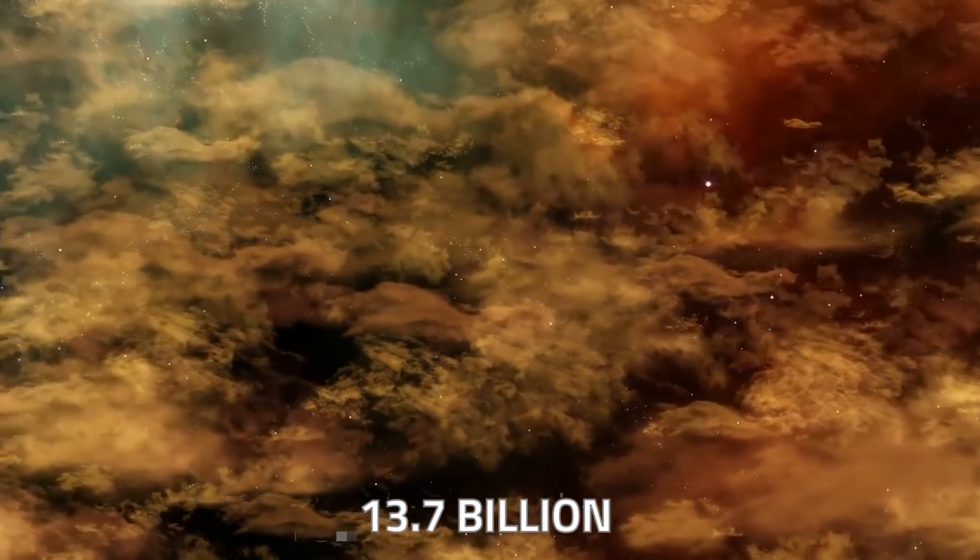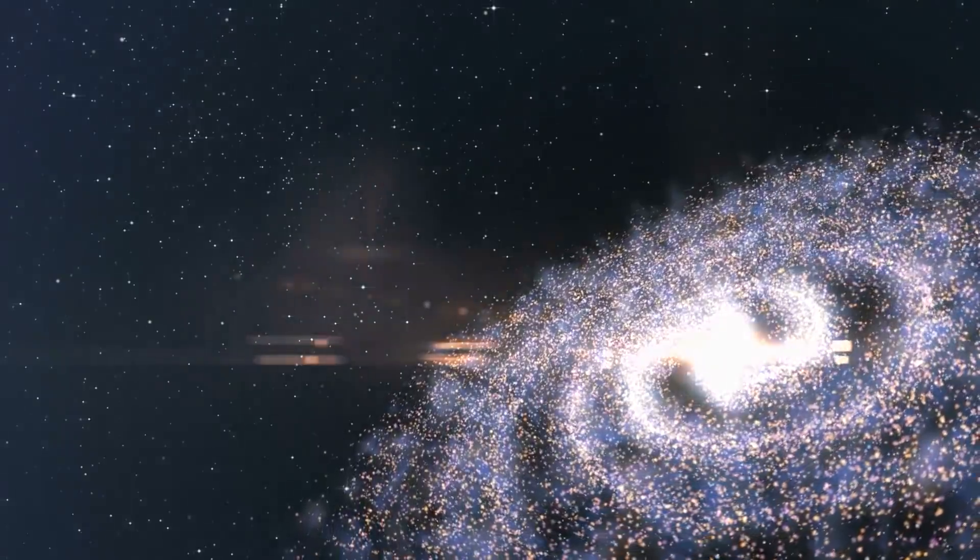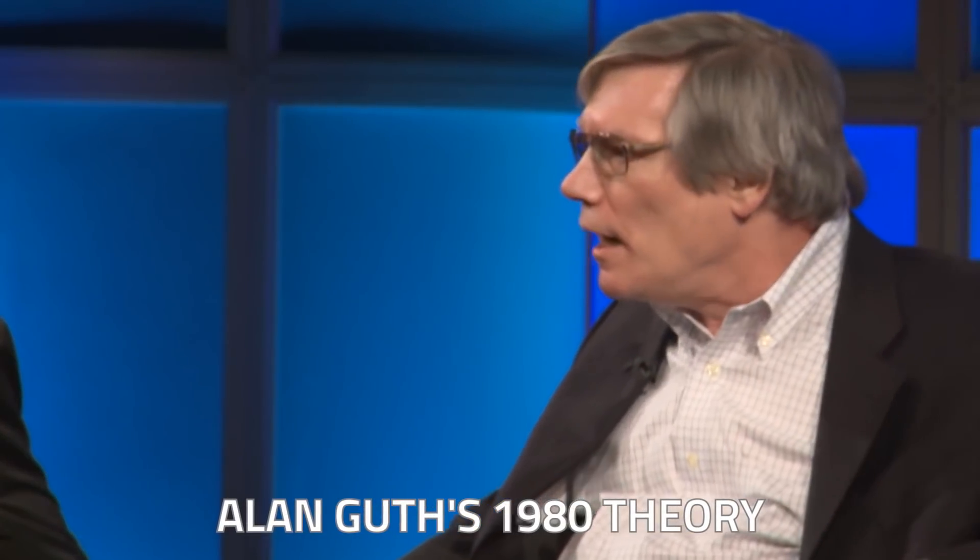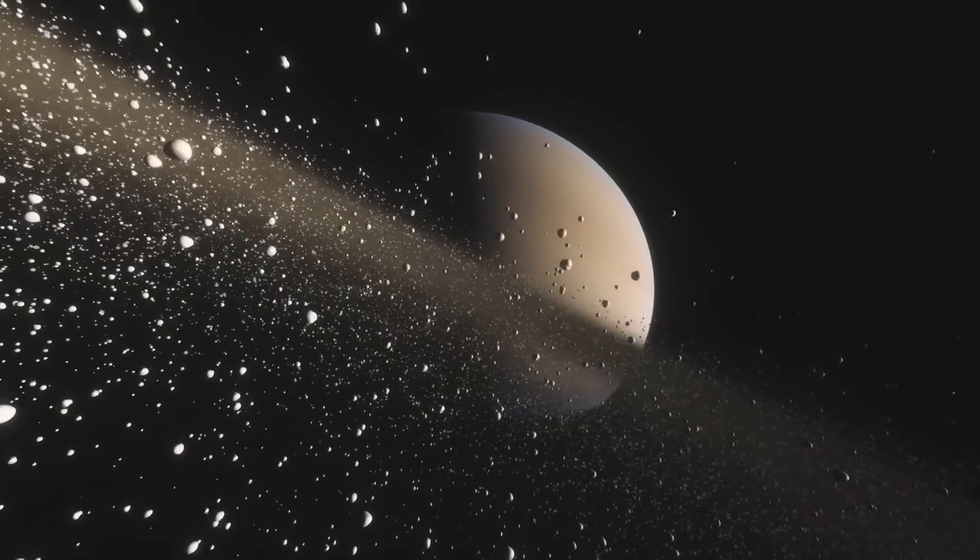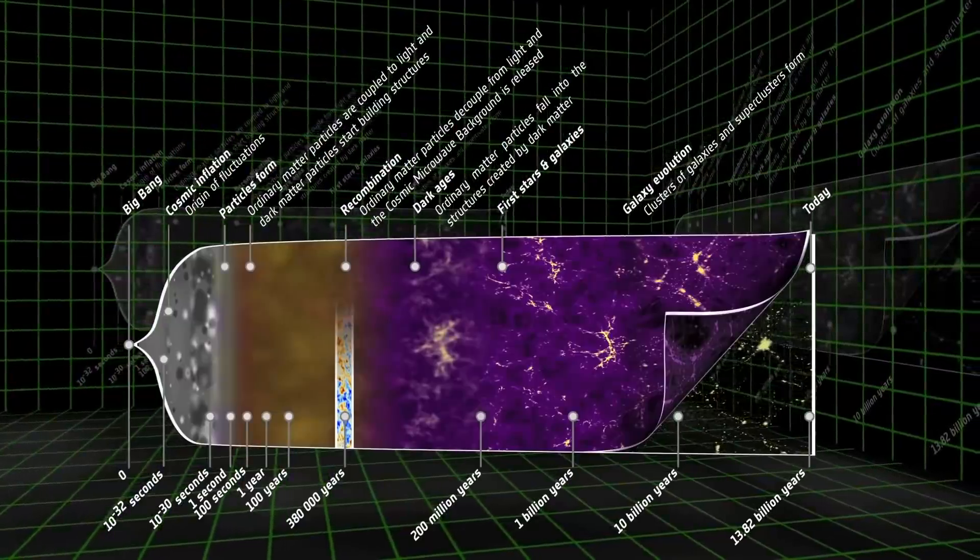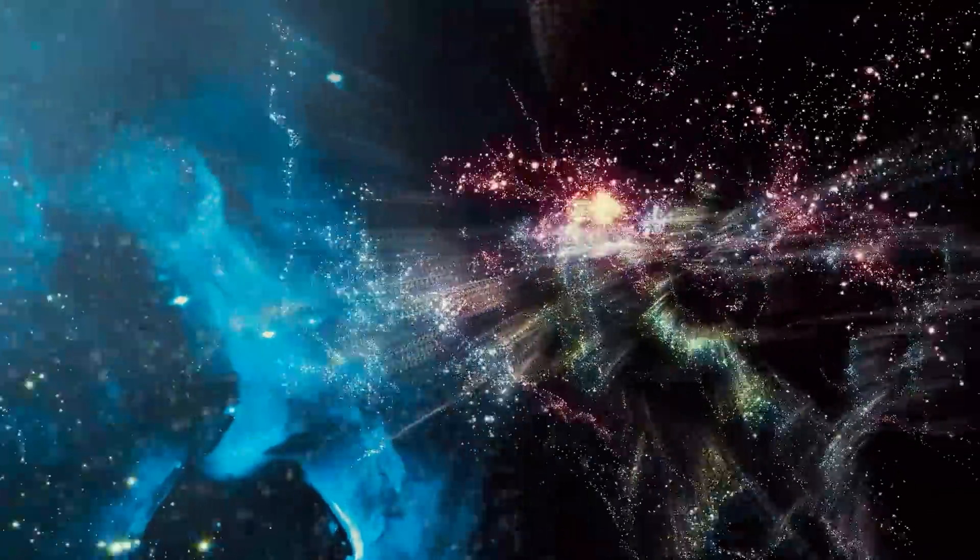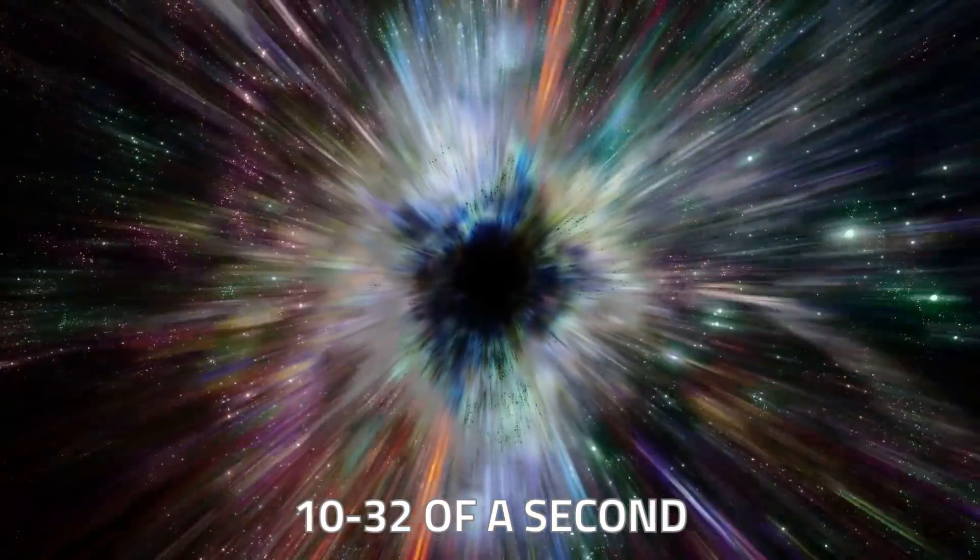Around 13.7 billion years ago, our universe suddenly began to expand at a rate greater than the speed of light. According to scientist Alan Guth's 1980 theory, which transformed the way we think about the Big Bang forever, this was a phase of cosmic inflation that lasted only fractions of a second, maybe as little as 1/32nd of a second.